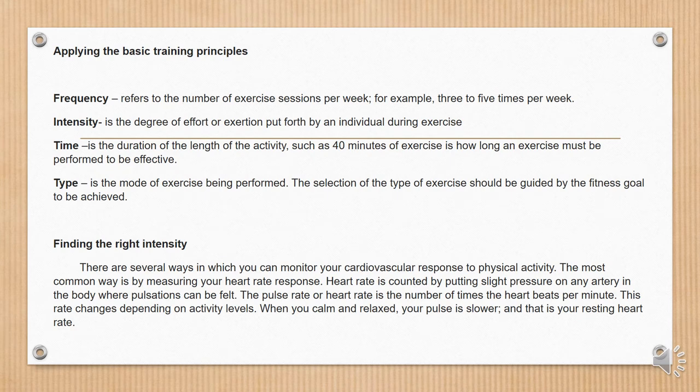Applying the basic training principles. Frequency refers to the number of exercise sessions per week, for example three to five times per week. Intensity is the degree of effort or exertion put forward by an individual. Time is the duration or length of the activity, such as 40 minutes of exercise — how long an exercise must be performed to be effective. Type is the mode of exercise being performed; the selection of exercise type should be guided by the fitness goal to achieve.